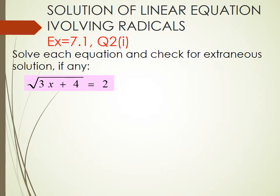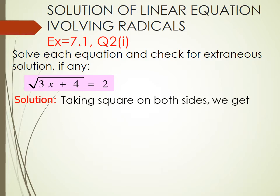For removing square root, we will take square on both sides of the given equation. Taking square on both sides, we get square root of 3x plus 4 whole square equal to 2 square. After cancelling the square with square root, we get 3x plus 4 equals to 4.